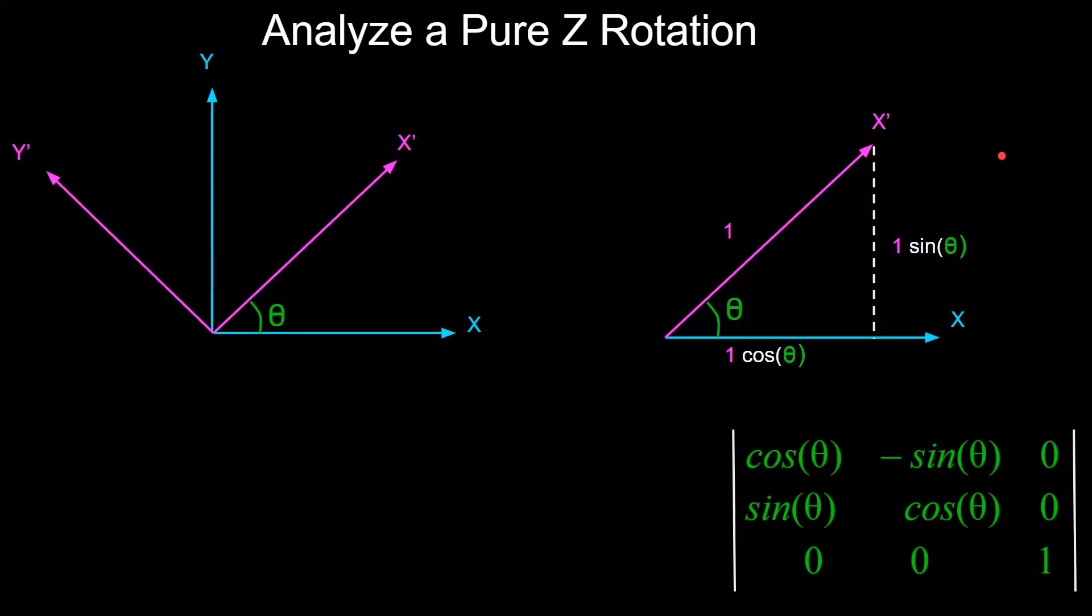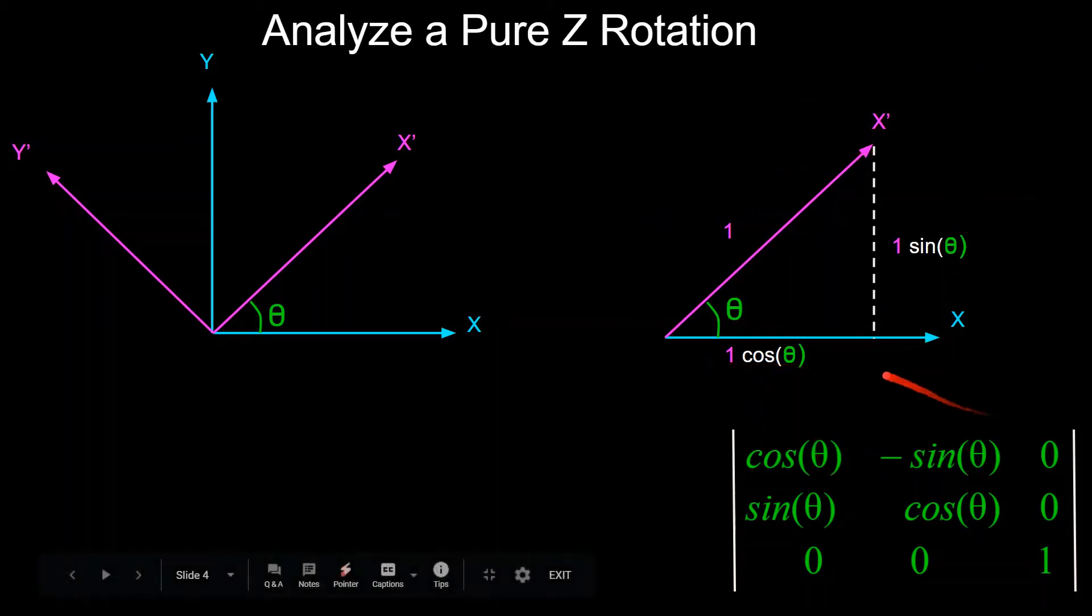And the horizontal distance from the origin to the projection of this rotated x-axis vector down to here in the original x-axis vector, this length is equal to 1 times the cosine of theta. So this means that the x-coordinate of the x-rotated vector is equal to cosine theta, and the y-coordinate of the rotated vector is equal to sine theta. So now you might be able to begin to see how these trigonometric functions and this type of analysis will apply into why this rotation looks the way it does.